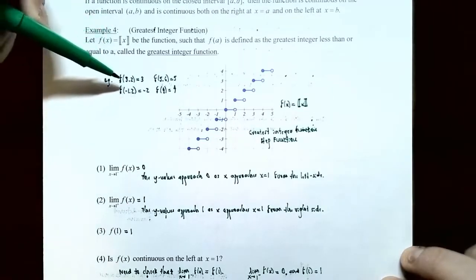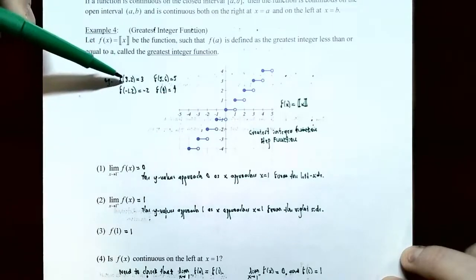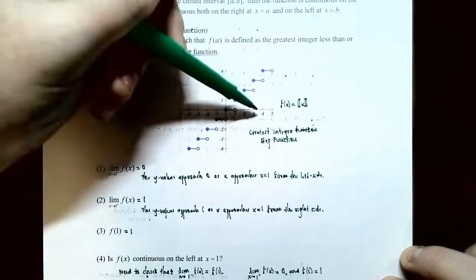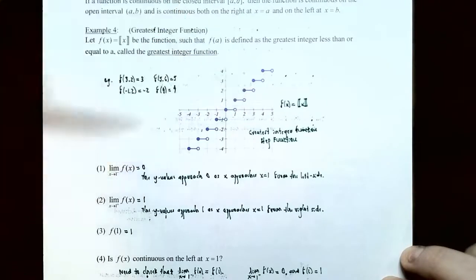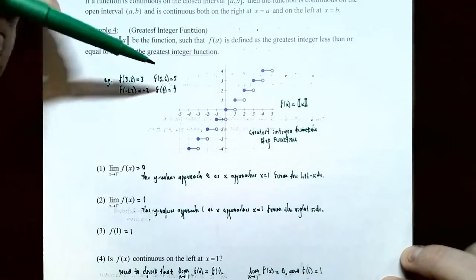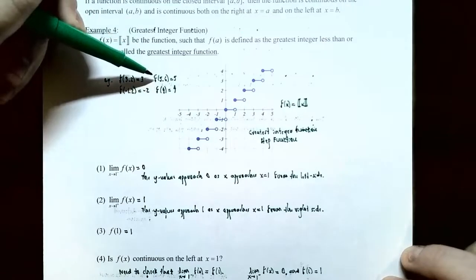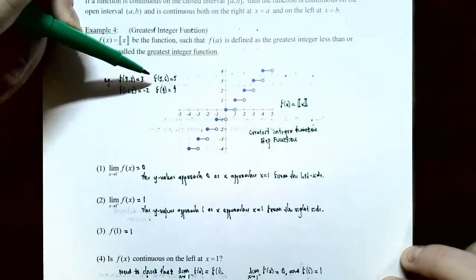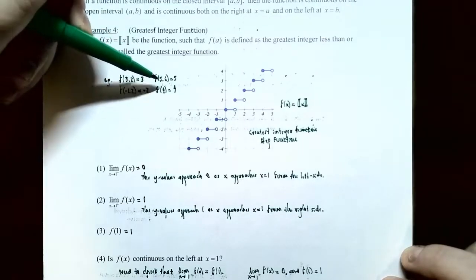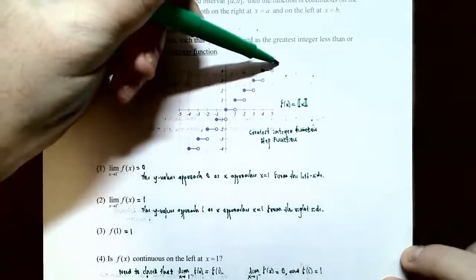Here are a few examples. f(3.2): the greatest integer less than 3.2 is 3, so the y value is 3. If you plug in 5.6, you get 5 — the greatest integer less than 5.6. This function does not round up or round down; it's the greatest integer that's less than the value you plug in.